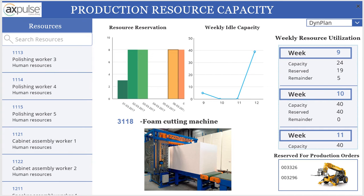Hi, welcome to AXPulse Production Resource Capacity App developed using Microsoft Dynamics AX2012 R3 and Microsoft Power Apps. Using this app, users can take a look at all the resources as they are in their Microsoft Dynamics AX2012 deployment that has been used either for production or project module.